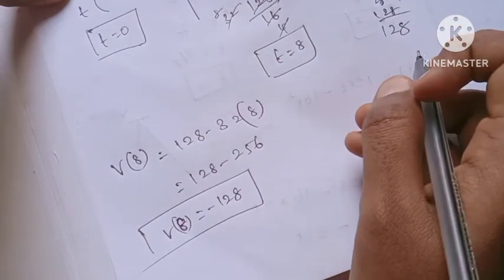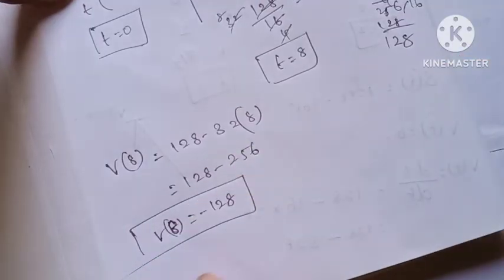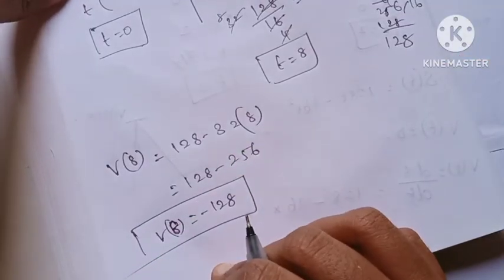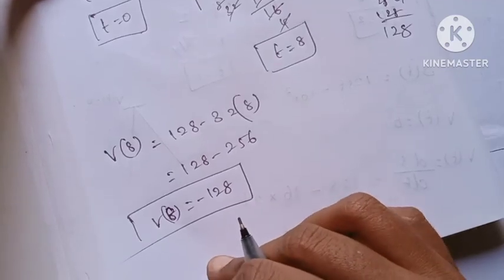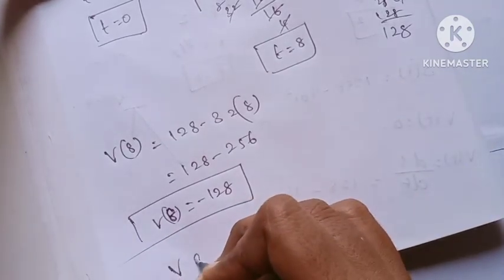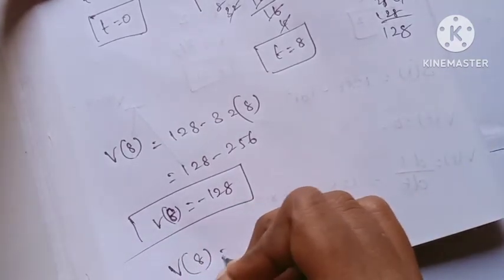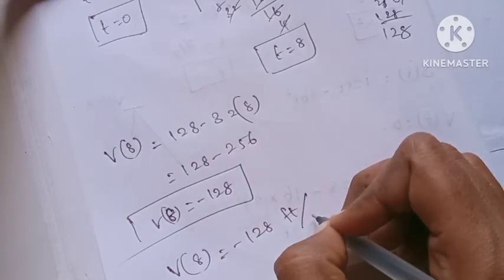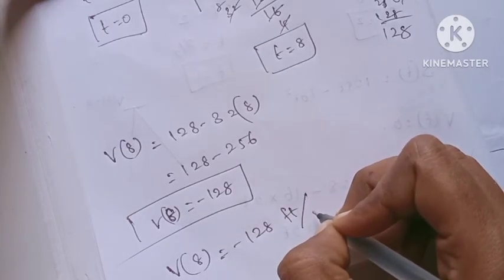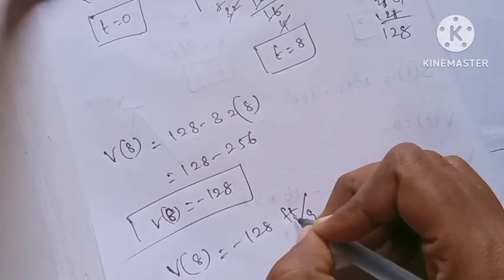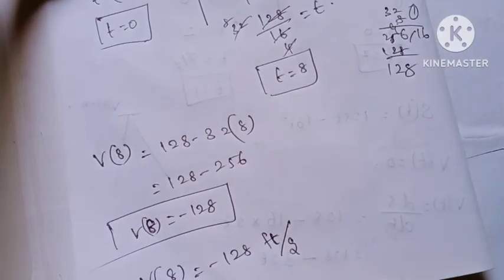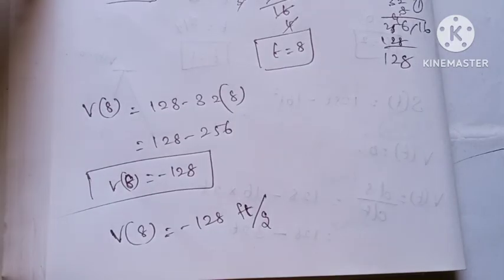Now we find the velocity at t equals 8. V of 8 equals 128 minus 32 times 8, which equals 128 minus 256, equals negative 128 feet per second. The negative sign indicates the particle is moving downward when it hits the ground.